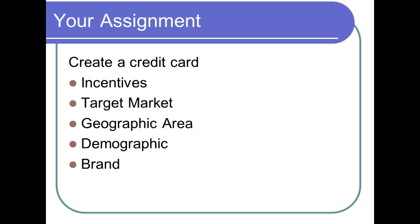Your assignment today has two pieces. First, I want you to look up how a credit score is calculated — it's called the five C's of credit. Do a Google search on how your credit score is calculated and write a summary on that. Second, create a credit card concept: come up with some incentives, a target market, geographic area, demographic, and a brand for your card. Make a one-page magazine ad for that credit card. So: what goes into your credit score, and a magazine advertisement of a credit card of your choice. Have fun and good luck.